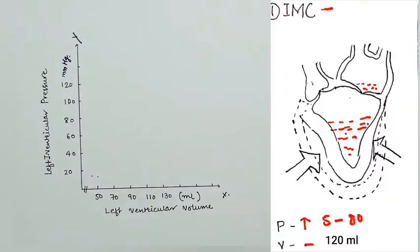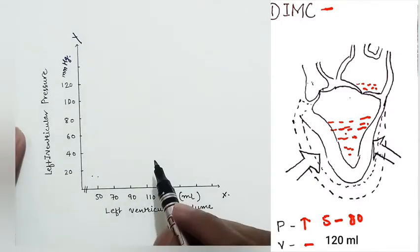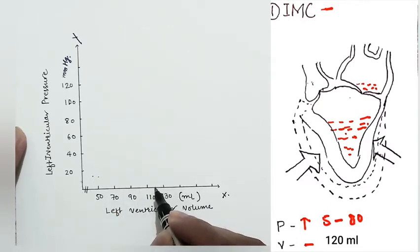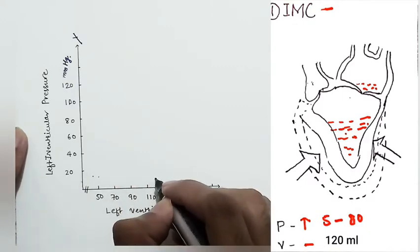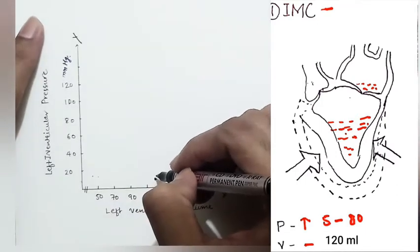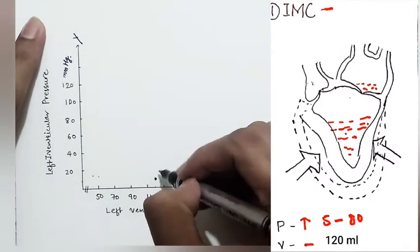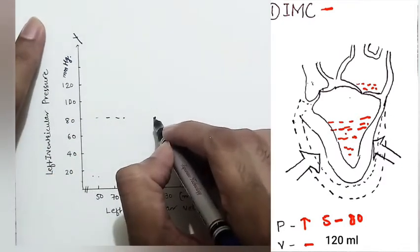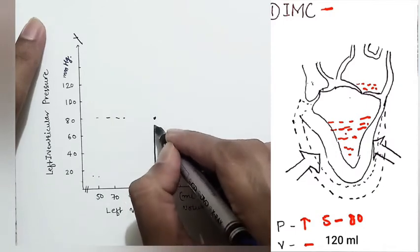The cardiac cycle starts with isovolumetric (isometric) contraction, where the ventricle acts as a closed chamber. Pressure rises from 5 mmHg to 80 mmHg, but volume remains constant at 120 ml. On the graph, this appears as a vertical rise along the 120 ml line.